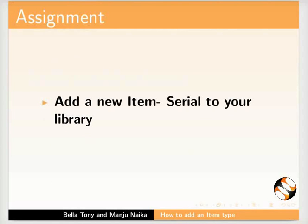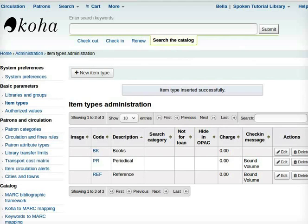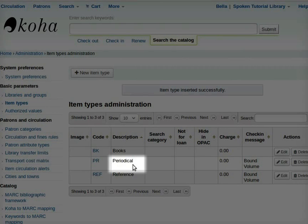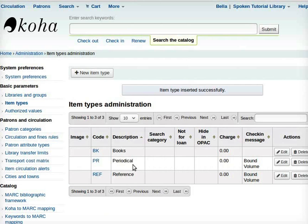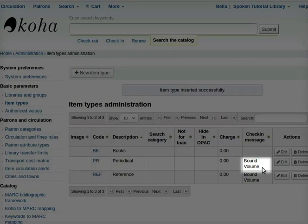As an assignment, add a new item serial to your library. After completing this assignment you should have the following in item types: periodical with the check in message bound volume.